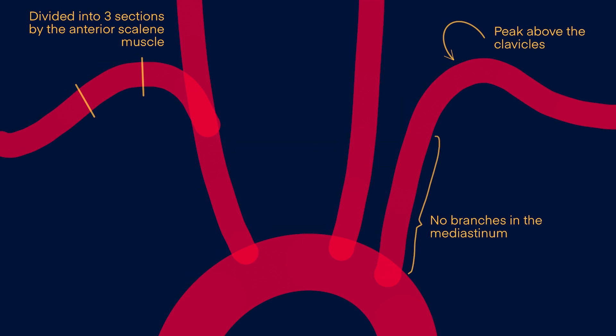Third, anatomically the subclavian artery is divided into three segments by the anterior scalene muscle, which passes directly anterior to it. The part medial to the anterior scalene is part one, the part covered by the anterior scalene is the second part, and the part lateral to the anterior scalene is the third part. Most of the branches come from the first part, but branches can also come off the second and third parts.